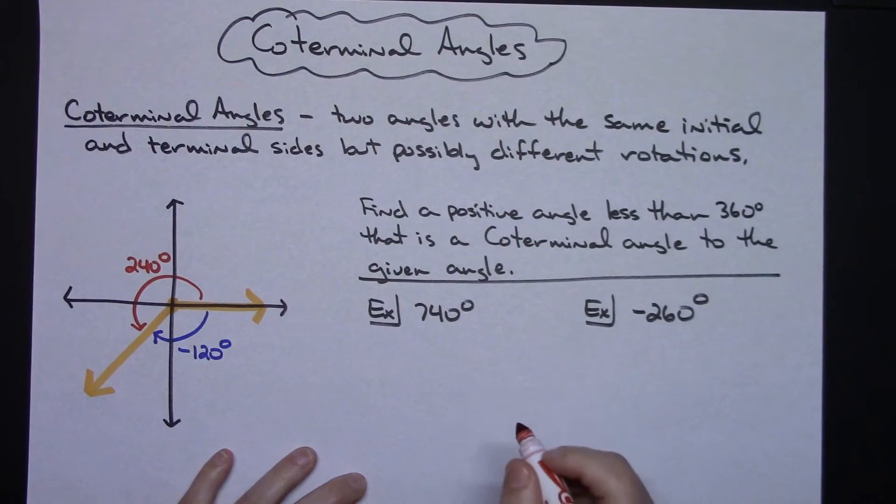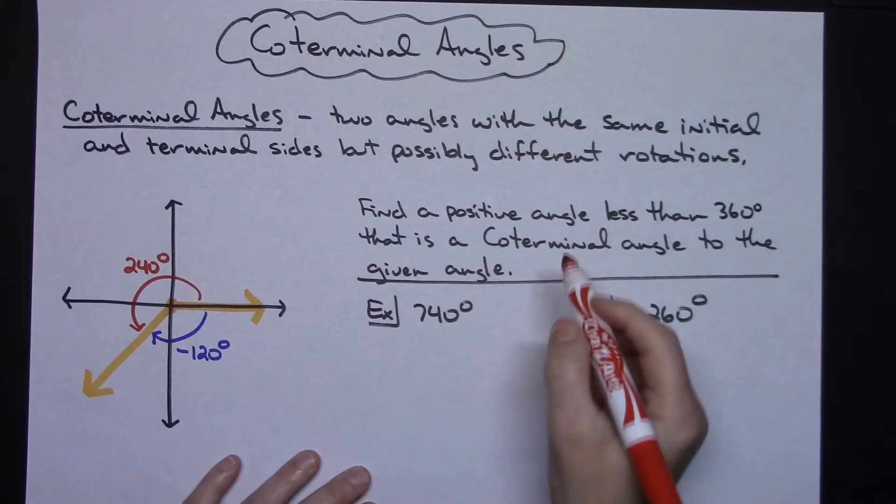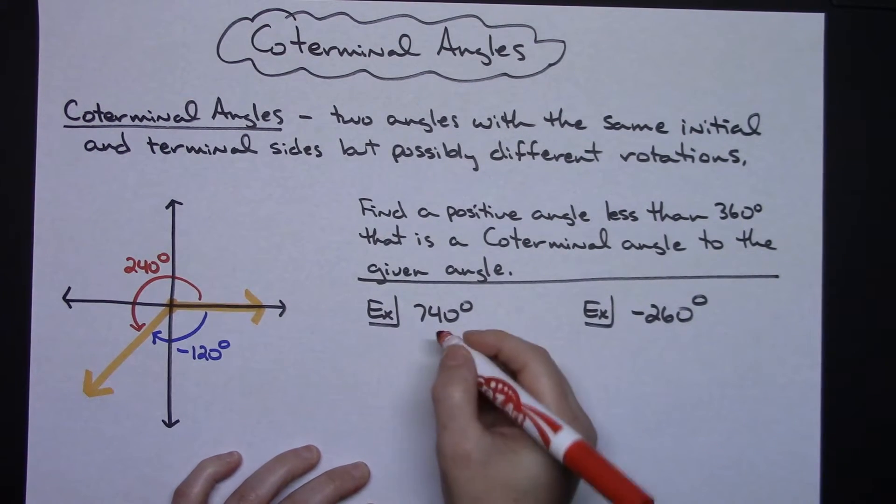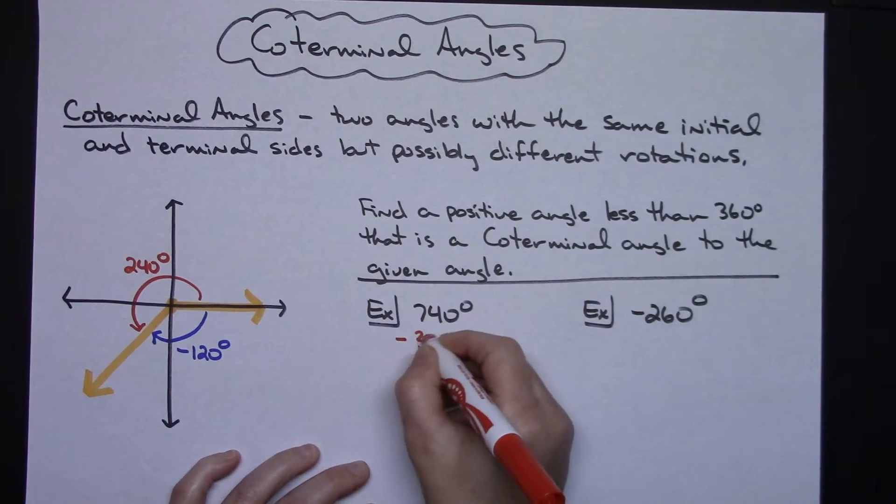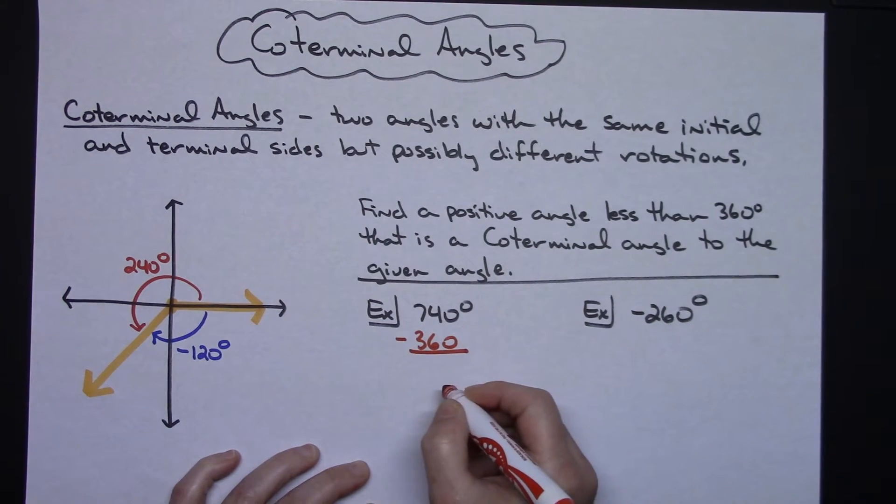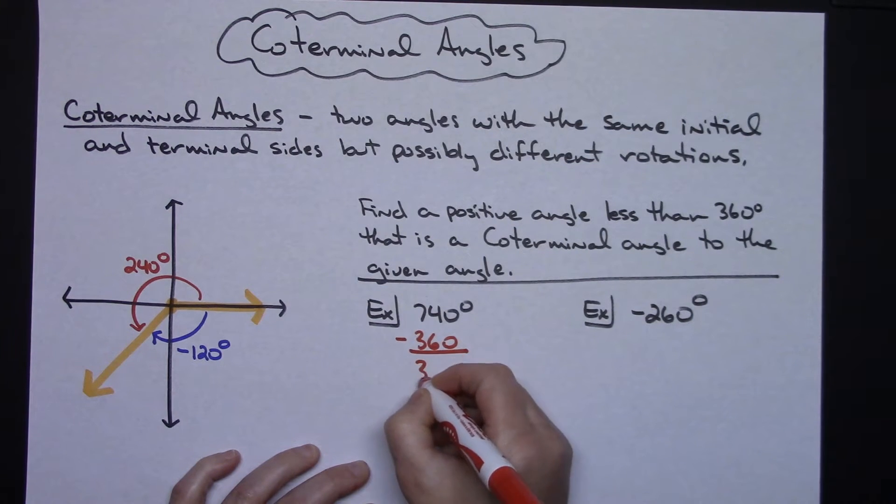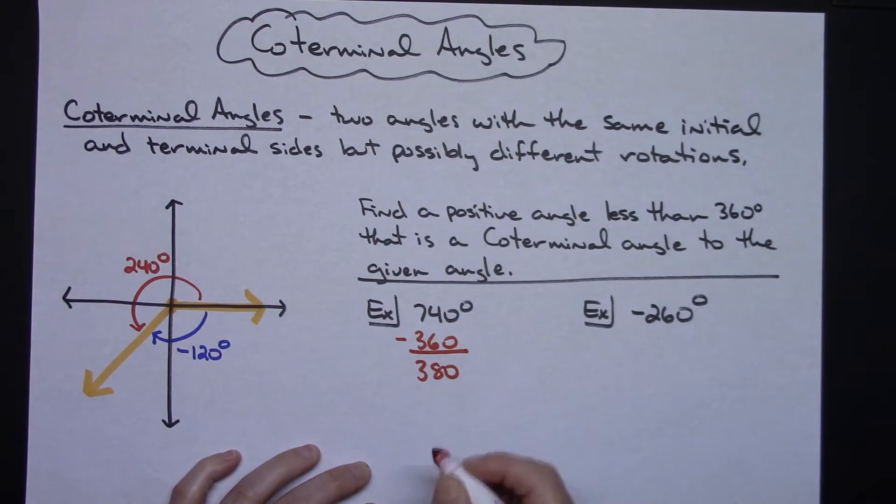And I'm going to want to continue to subtract it until I get a positive number less than 360 degrees. So let's start with that 740 and subtract 360. And when I do that I believe I get 380. I'm still over one time around the circle so I need to subtract 360 degrees again. And I'm going to end up with 20. So my coterminal angle is 20 degrees.